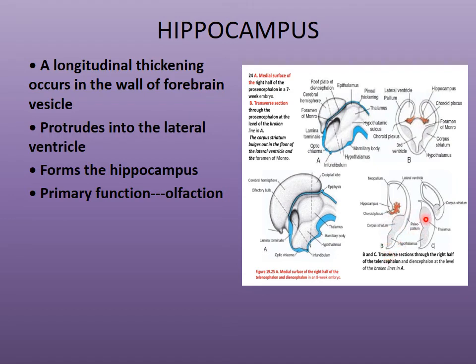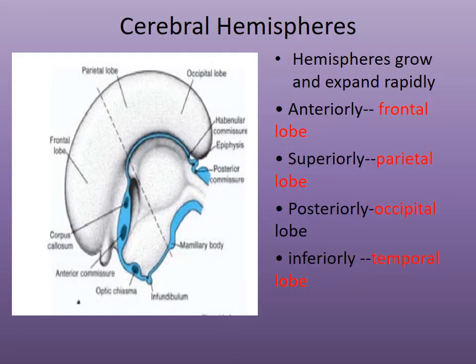The developing thalamus and hypothalamus — parts of the diencephalon — are visible below. As the cerebral hemispheres or telencephalic vesicles grow and expand rapidly in all directions — laterally and superiorly — they overhang the midbrain and hindbrain and form the different lobes.